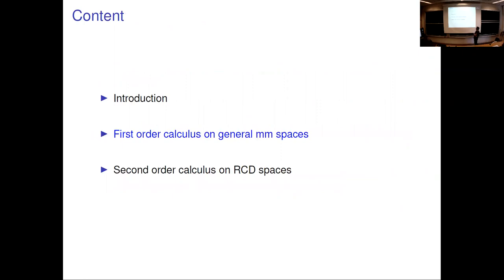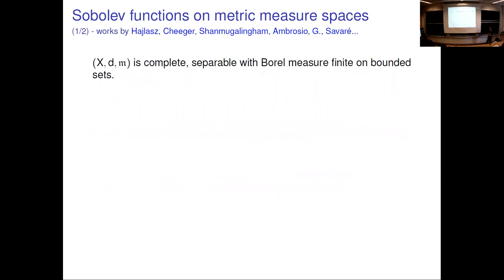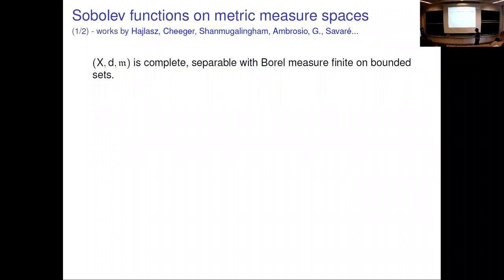Now, calculus on metric measure spaces. If we start from a metric measure space — completely separable in the metric sense, with a Borel measure finite on balls — then even though a priori we have no way to integrate by parts from just a metric-measure structure, it is still possible to give a meaning to the concept of Sobolev function. A first observation, going back to the original work of Iwasaki, is that if I have a function in L² and I want to know whether it is in W^{1,2}, I don't need to know the distributional differential — I only need to know its modulus. That modulus is a number rather than a vector, and that has more chances to admit a definition in the metric category.